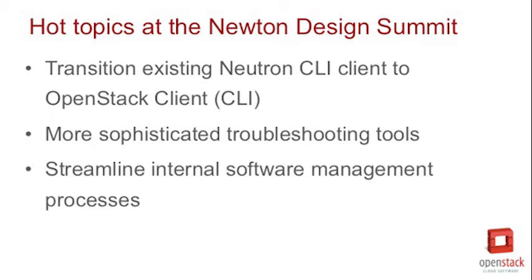We're about a month approximately from the Austin Design Summit. What were some of the hot topics you and your team discussed, and what were some of the outcomes? In Austin, we had a number of exciting sessions — there's usually lots of yelling, but good discussions. We agreed on a number of key areas, including how we could transition the existing Neutron client over to the OpenStack client. We also talked about how to provide more sophisticated troubleshooting tools for users and operators, which is also an overdue area of improvement.